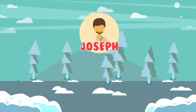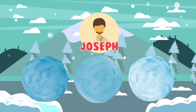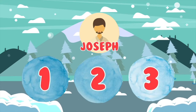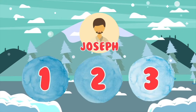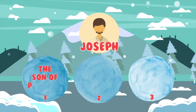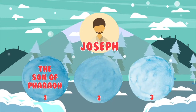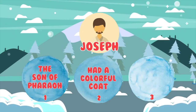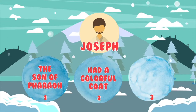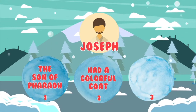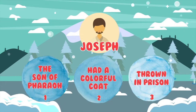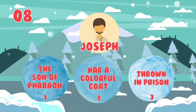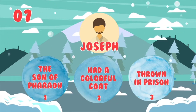Joseph from the Old Testament is our final Bible character. Which of these is not true about Joseph? One: Joseph was the son of Pharaoh. Two: Joseph had a colorful coat. Three: Joseph was thrown in prison. Which of these snowballs is not telling the truth?